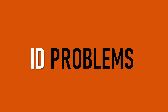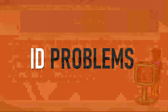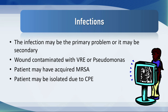Infection problems. Infection may be the primary problem or it may be secondary. For example, you might say the wound is contaminated with VRE or Pseudomonas, or the patient may have acquired MRSA, or the patient may have to be isolated due to CPE. It's important that infections and contaminations are identified and put as part of the problem list.